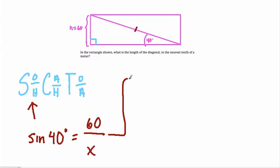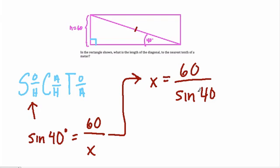If we rewrite this equation using algebra, x is going to be equal to 60 over the sine of 40, and all I really did there is multiply both sides by x and divide both sides by the sine of 40.